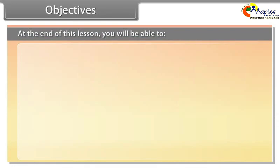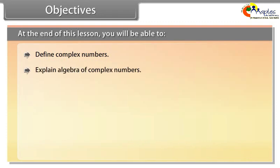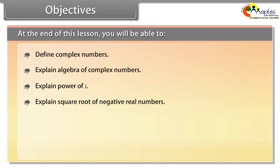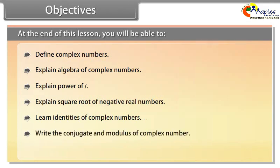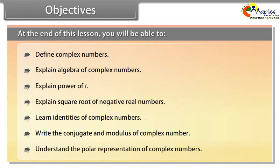Objectives. At the end of this lesson, you will be able to: define complex numbers, explain algebra of complex numbers, explain power of iota, explain square root of negative real numbers, learn identities of complex numbers, write the conjugate and modulus of complex numbers, and understand the polar representation of complex numbers.